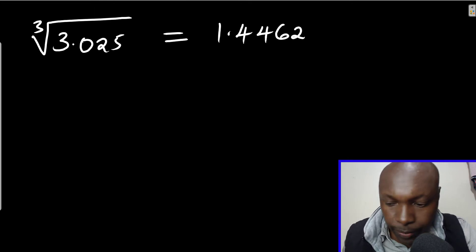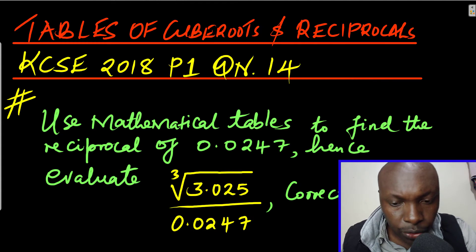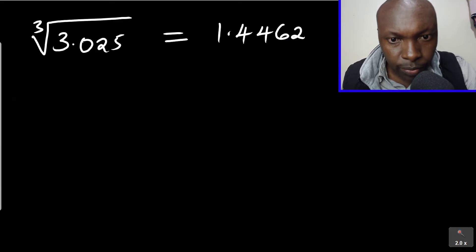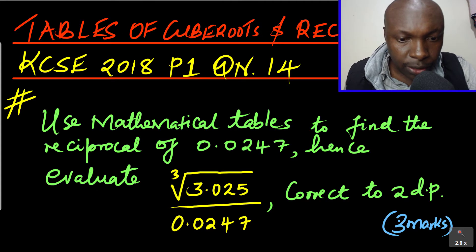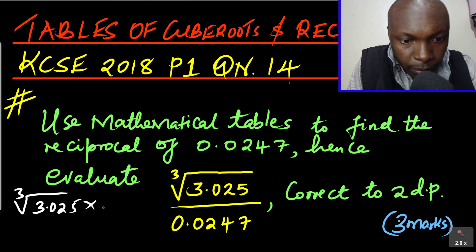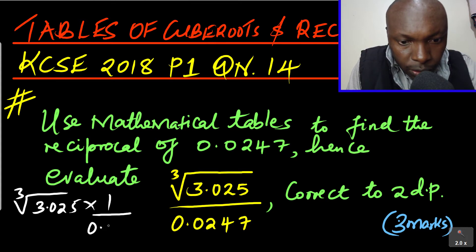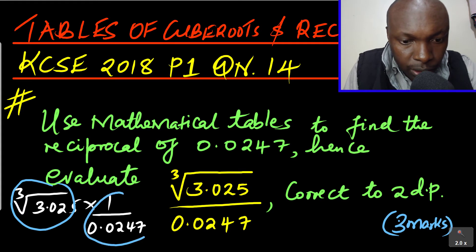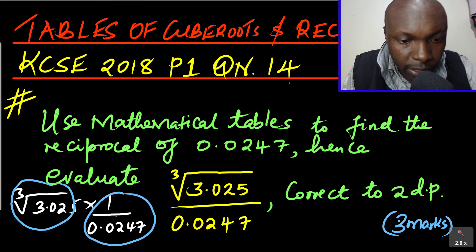Next, we are going to find the reciprocal of the denominator. When you split the expression, you get the cube root of 3.025 multiplied by 1 over 0.0247. So we now need to find the reciprocal, that is 1 divided by 0.0247.